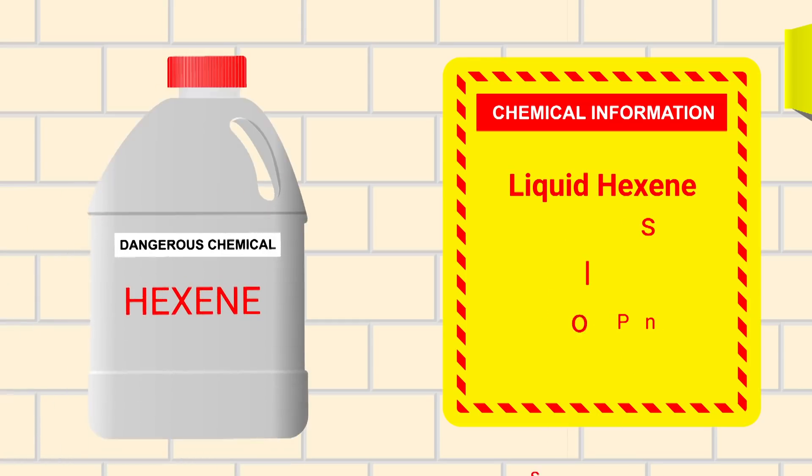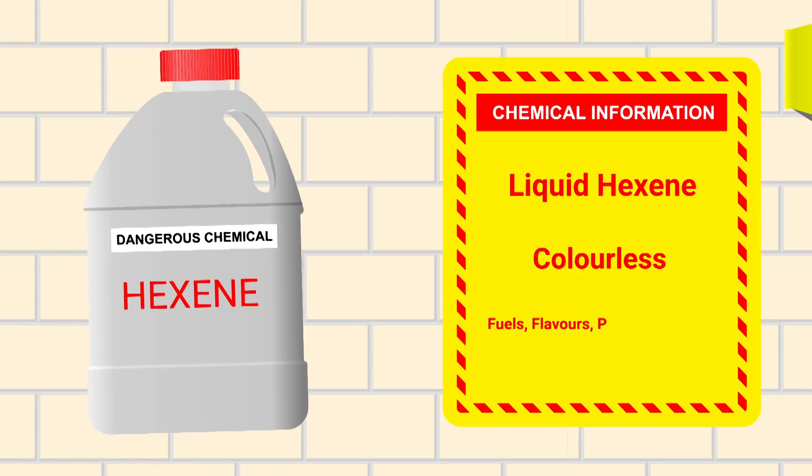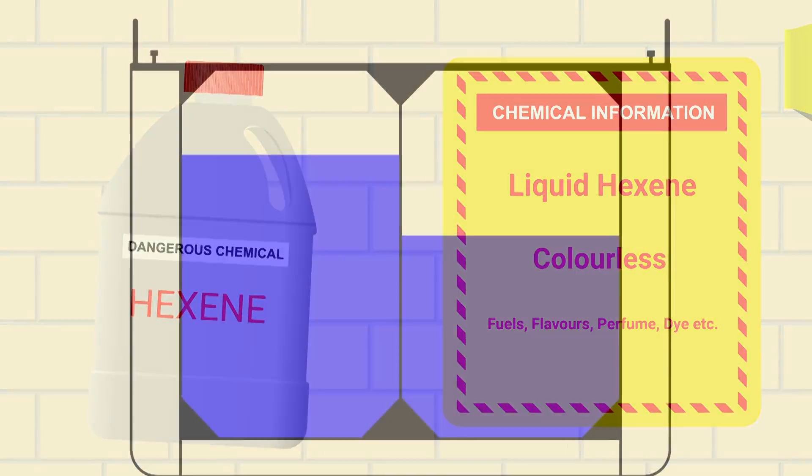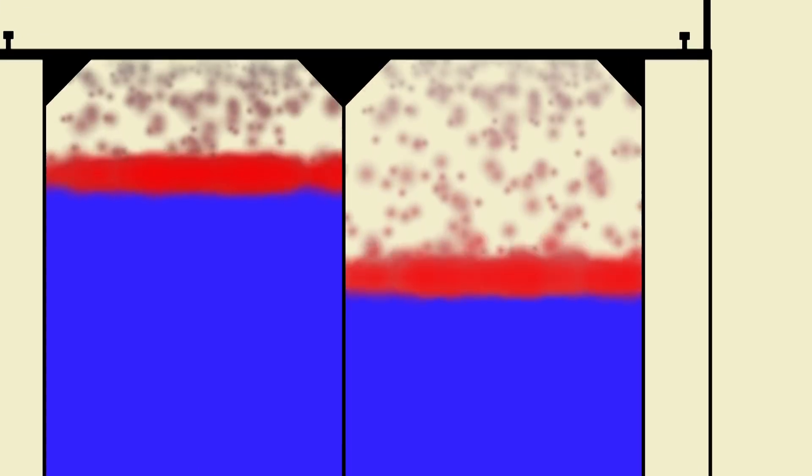Liquid hexine is also colourless and used in fuels and to make flavours, perfumes, dyes and things. Unlike MIBK though, liquid hexine has an awkward habit of absorbing oxygen so it needs to be stored and transferred under a blanket of inert gas, in this case nitrogen.